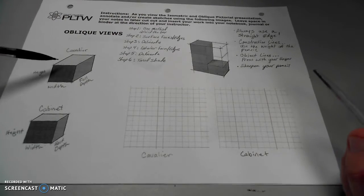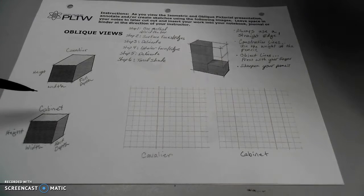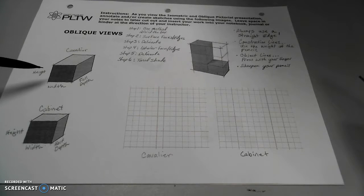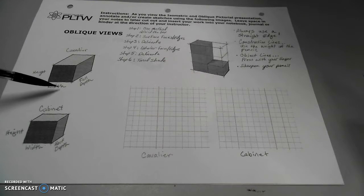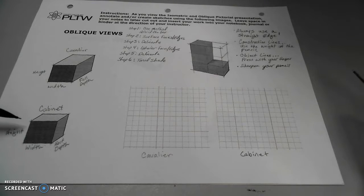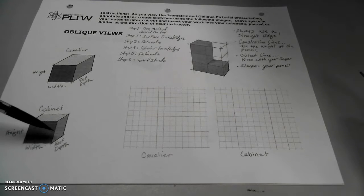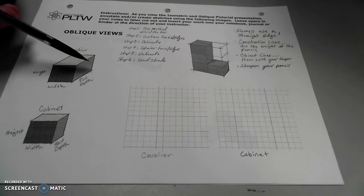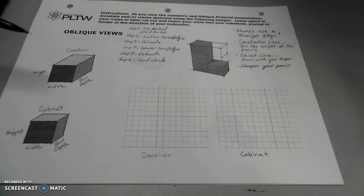We're going to create a cavalier, and we're going to create a cabinet. Cavalier height and width is exactly the same as a cabinet, but the difference is their depth. Cabinet has half depth, cavalier has full depth. This means that anytime you create a cabinet, it should be half as deep as you could create a cavalier.